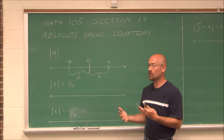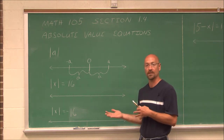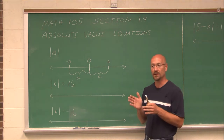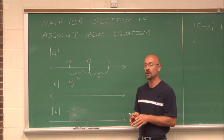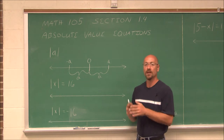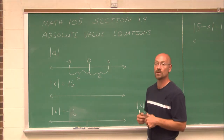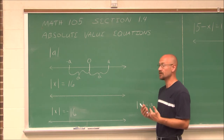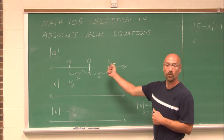If anyone ever asked you a distance, you're not going to give them a negative value. A distance is always a positive value. If someone said how far is it from point A to point B, you're going to give a positive value. Absolute values always deal with positive values because they're asking a distance from a point of reference.